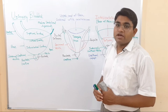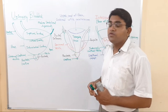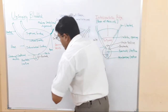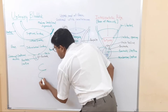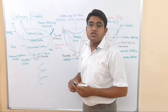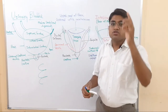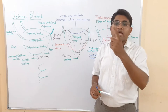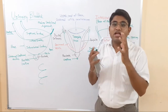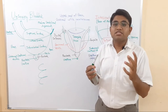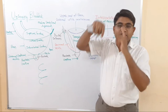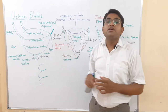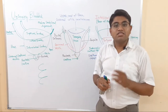The detrusor muscle of the urinary bladder is arranged in whorls and spirals — like a conch shell, where there are spirals. So this detrusor muscle is also arranged in this fashion. When this muscle is contracted, it does not cause peristalsis but causes mass contraction, meaning the whole organ contracts at once, and the entire urine present in the urinary bladder comes out from the internal urethral sphincter.